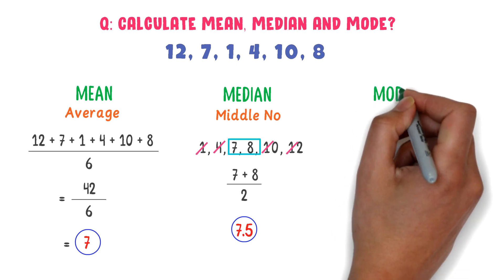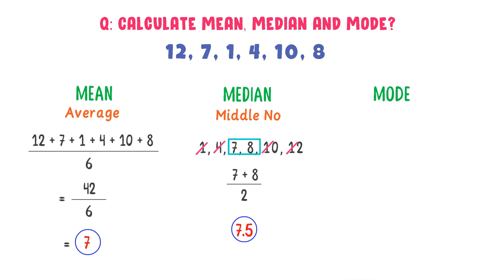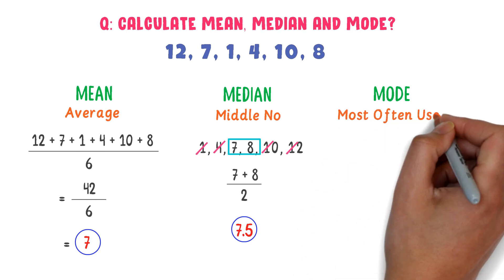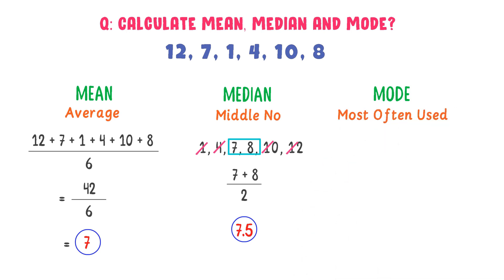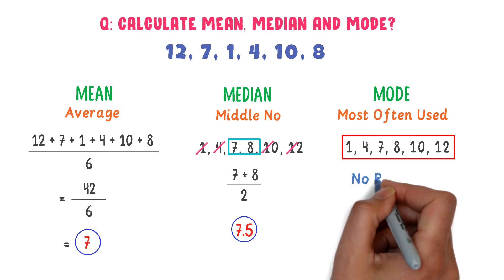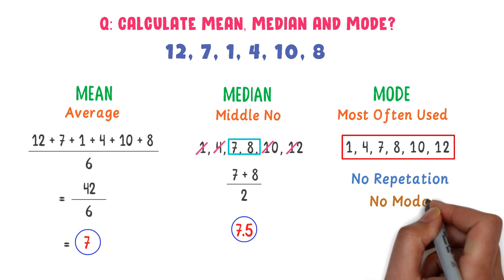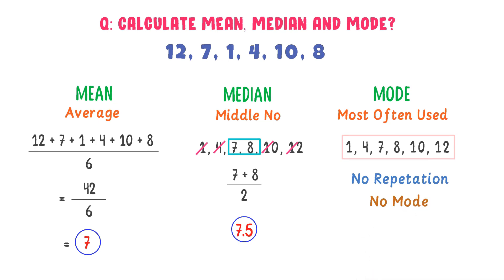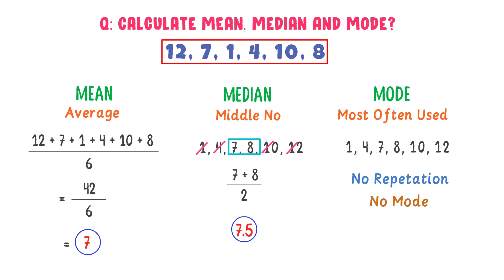Now what about the mode? We know that mode is the most often used number. We can see that no number is repeating in this data set. Remember: no repetition means no mode. So the mode of this data set is none.